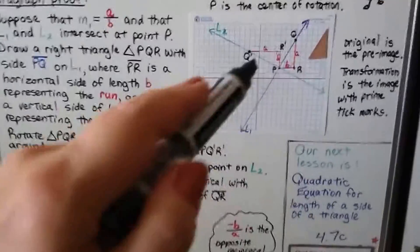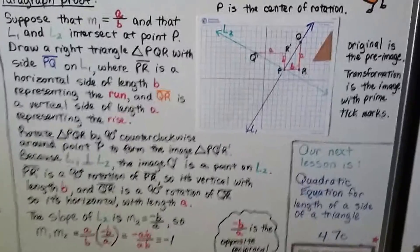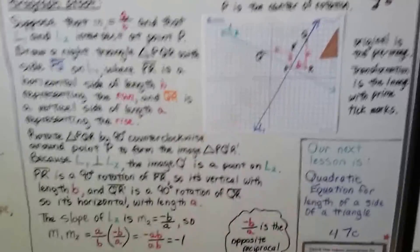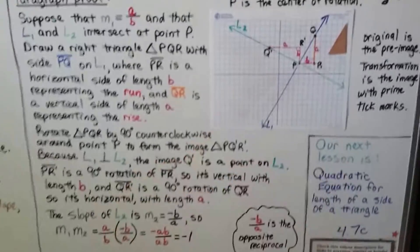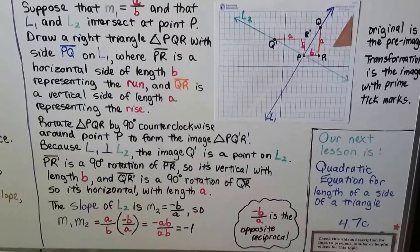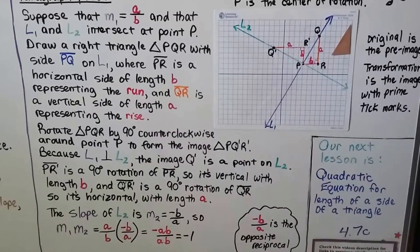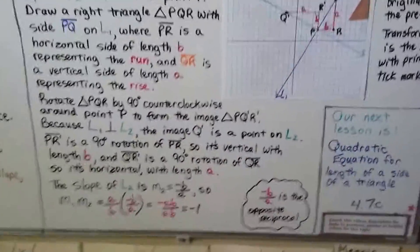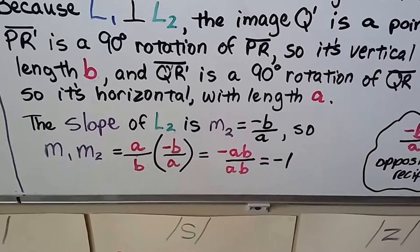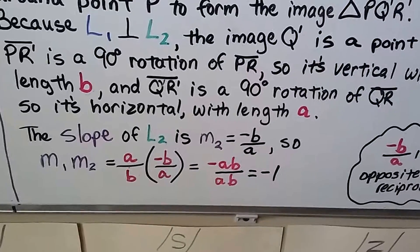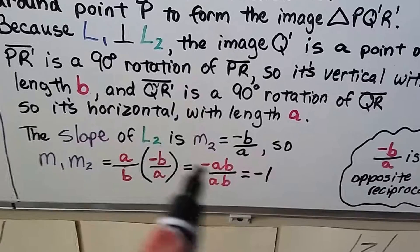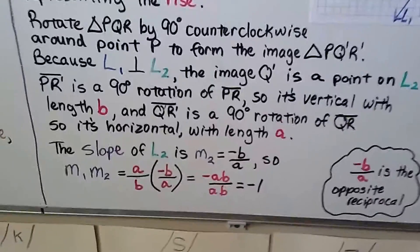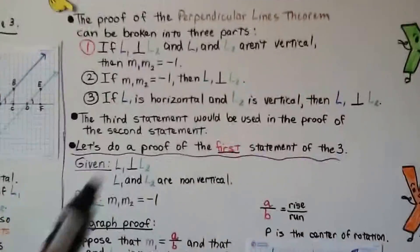Segment PR prime is a 90-degree rotation of PR, so it's vertical with length B. Segment Q prime R prime is a 90-degree rotation of QR, so it's horizontal with length A. The slope of l sub 2 is m sub 2, which equals negative B over A — the opposite reciprocal. So m sub 1 times m sub 2 equals A over B, multiplied by negative B over A, giving us negative AB over AB. The numerator and denominator are the same, so that equals negative 1. Therefore m sub 1 times m sub 2 equals negative 1.